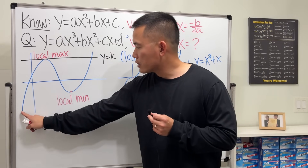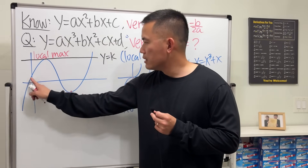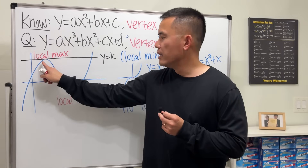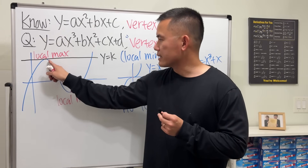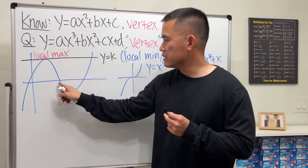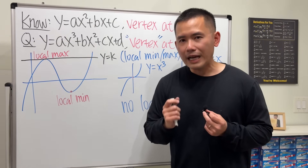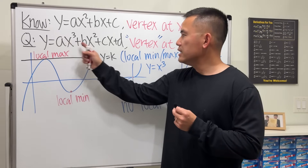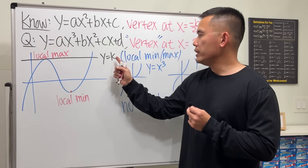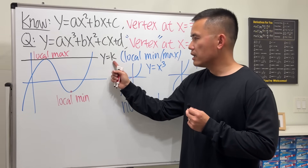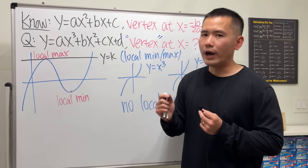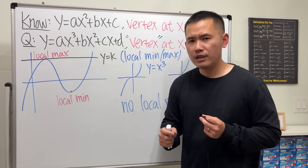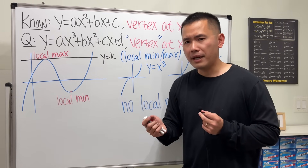This right here goes up, hits kind of a wall, and then bounces back down like this. So what's going to happen is that if I set this part to equal k, then that equation will have a double root. So what do I mean by that?